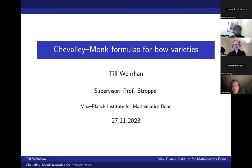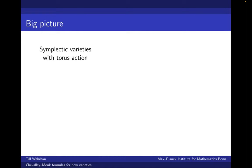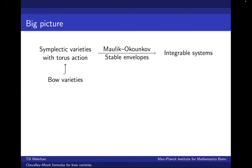I will start by giving a rough motivation by considering a bigger picture, introducing the theory of stable envelopes. Maulik and Okounkov provided a way to assign to a very rich family of symplectic varieties with torus action, and some additional properties, an integrable system. The family of bow varieties is also a very general family of varieties fitting into this framework, and they naturally generalize the cotangent bundles of flag varieties.